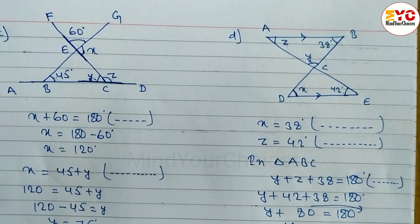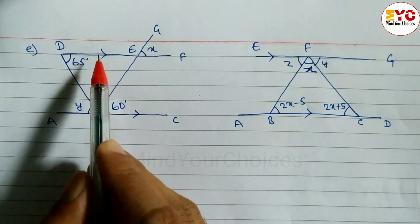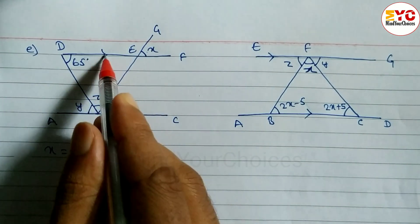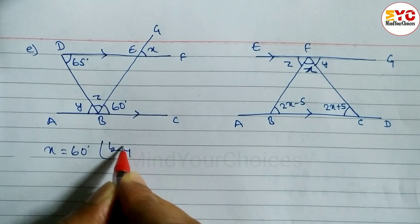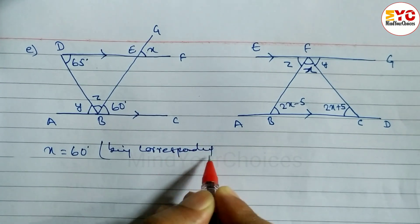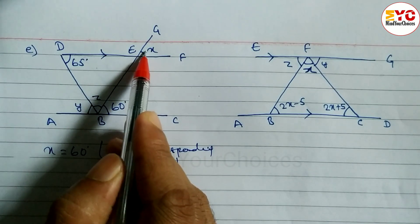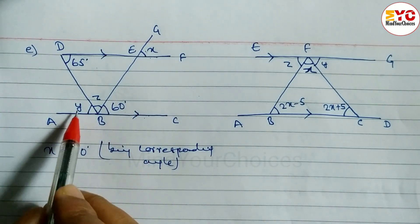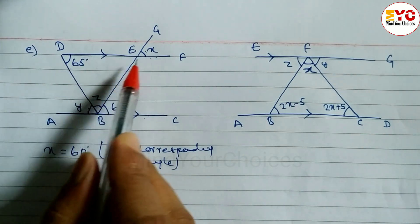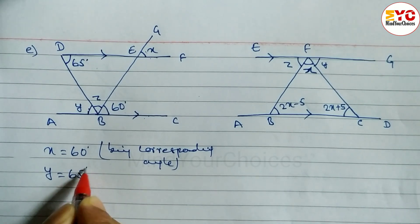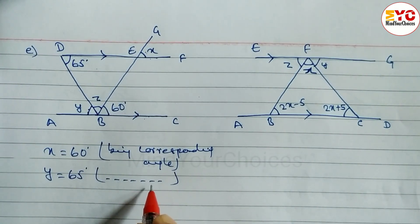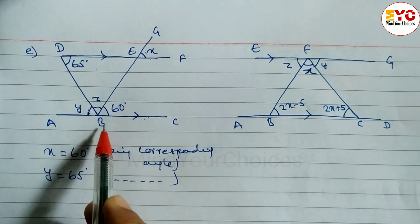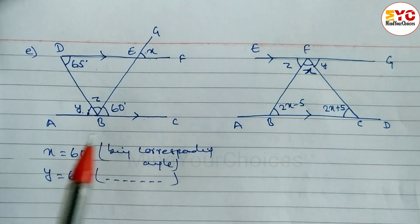Now look at question number E. You can see here these two lines are parallel. It means we can write x is equal to 60 — reason: being corresponding angle, because one angle is inside and one is outside of these two parallel lines. Similarly, these two are parallel, so y is equal to 65 — reason: being alternate angle, as this is in the form of Z. One angle is on the left side and one on the right side of this line.